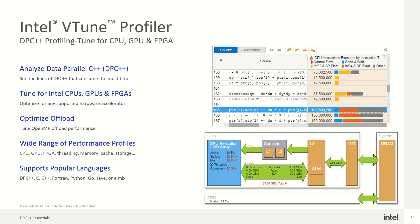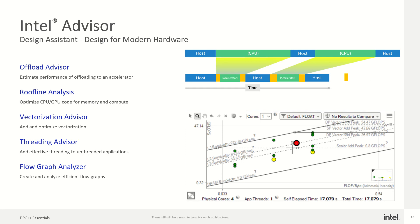The language support will stun you — DPC++, C, C++, Fortran, Python, Go, Java, and more are all supported, so traditional programming knowledge is still very useful. We've also got Intel Advisor, an assistant that helps you design your system better. It includes an Offload Advisor for estimating accelerator offload performance, Roofline Analysis for optimizing CPU/GPU code for memory and compute, a Vectorization Advisor, a Threading Advisor for adding effective threading, and a Flow Graph Analyzer.